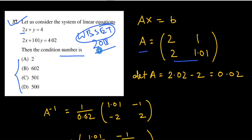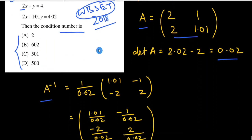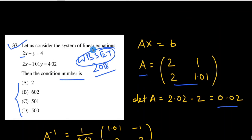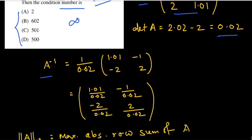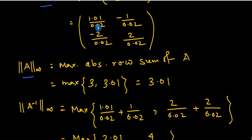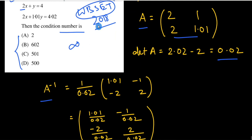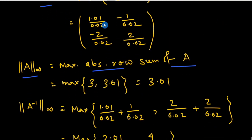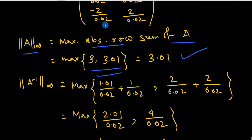We first calculate the determinant of this matrix, which gives 0.02. Since we have to calculate the condition number using the infinity norm, we find A inverse = (1/0.02) × [1.01, −1; −2, 2]. The infinity norm of A equals the maximum of the absolute row sums, giving maximum of 3 and 3.01, so norm∞(A) = 3.01.